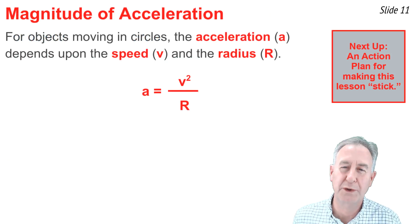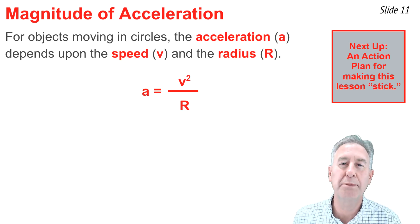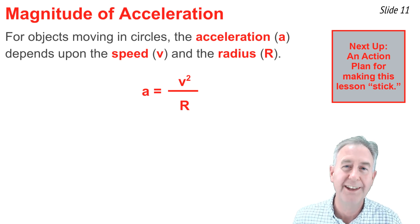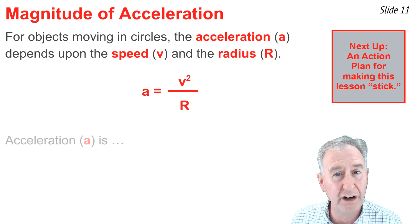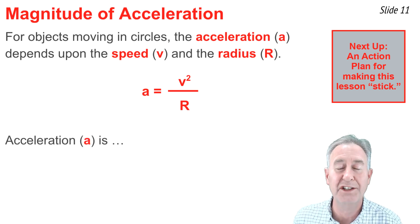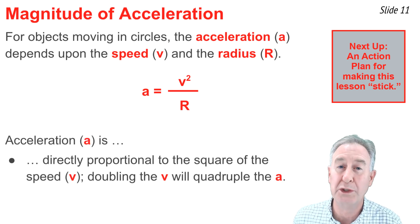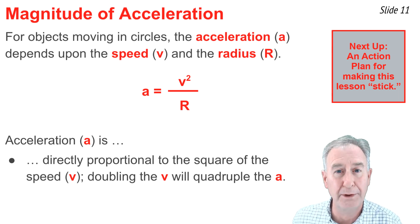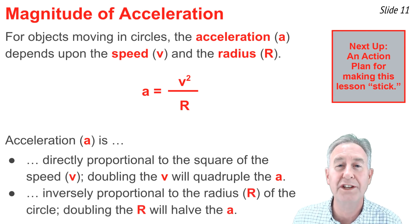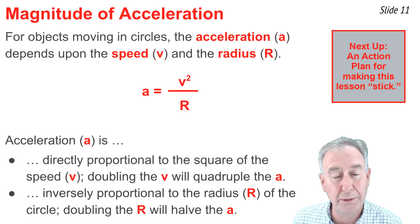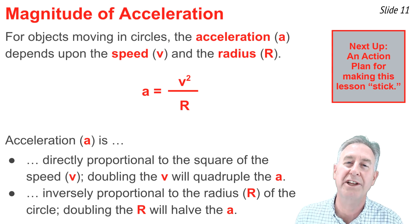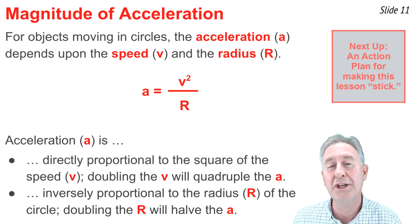For objects moving in a circle at a constant speed, the acceleration a depends on the speed v and the radius r. The equation is a = v² / r. As the equation indicates, acceleration is directly proportional to the square of the speed — so if speed is doubled, acceleration is quadrupled. Acceleration is inversely proportional to the radius — so if the radius is doubled with no change in speed, the acceleration becomes one half of the original value.